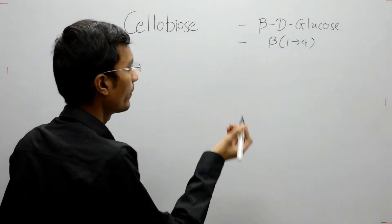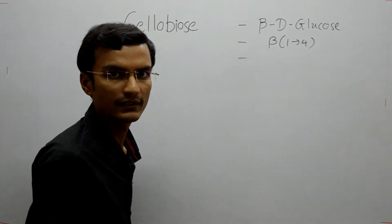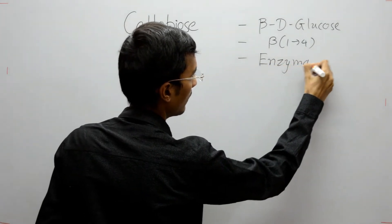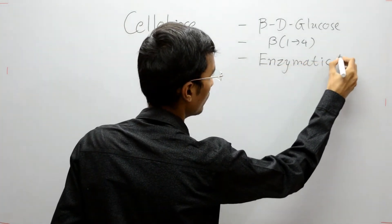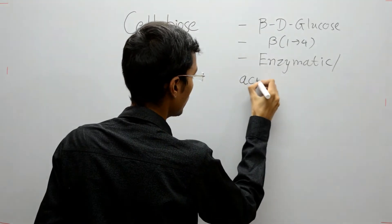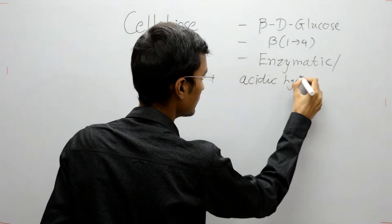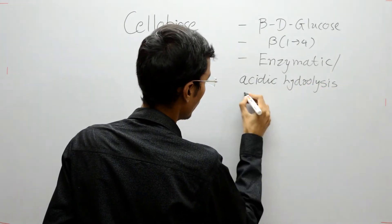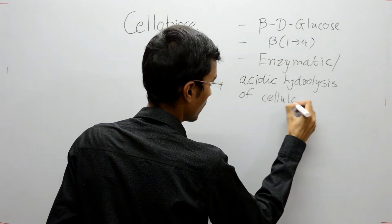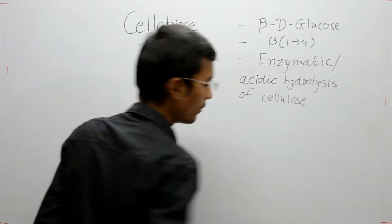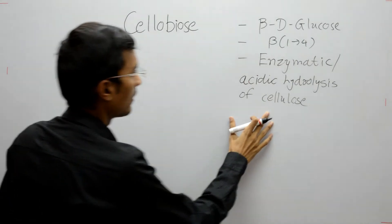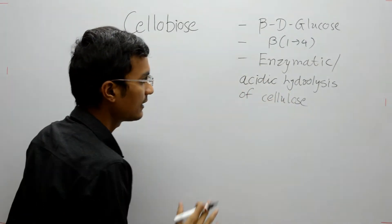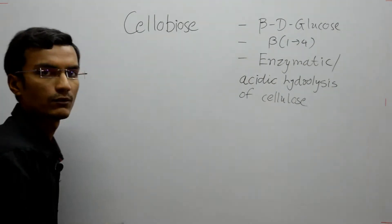Cellobiose is formed by enzymatic or acidic hydrolysis of cellulose. Cellulose is a polysaccharide, and when an enzyme like cellulase or acidic hydrolysis of cellulose is performed, cellobiose is produced.